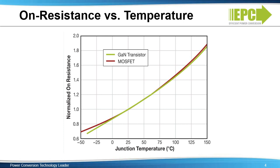The resistance of the individual components that make up the total device on resistance will vary with temperature. This plot shows the normalized on resistance as a function of junction temperature. The green line is the GAN transistor and the red line is a silicon MOSFET. The overall temperature dependence of RDS on will depend on the design of the device and how much of the on resistance comes from 2-DEG, contact resistance, or any other parasitic resistances. Enhanced mode GAN devices in commercial use typically demonstrate a variation of RDS on with temperature that is about the same as a silicon power MOSFET, as shown in this graph.